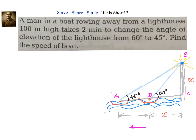Hello friends, welcome back. Let us look at this problem related to applications of trigonometry — heights and distances. A man in a boat rowing away from a lighthouse 100 meters high takes two minutes to change the angle of elevation of the lighthouse from 60 to 45 degrees. Find the speed of the boat.